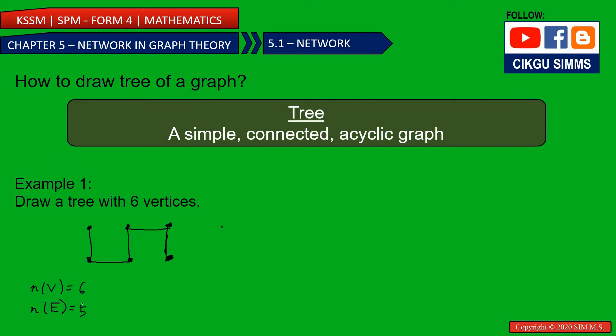So it satisfied the formula. 5 equal to 6 minus 1. So this is accepted as a tree.